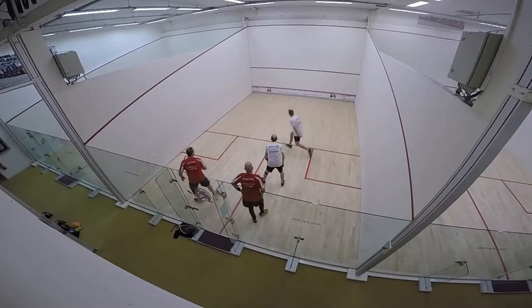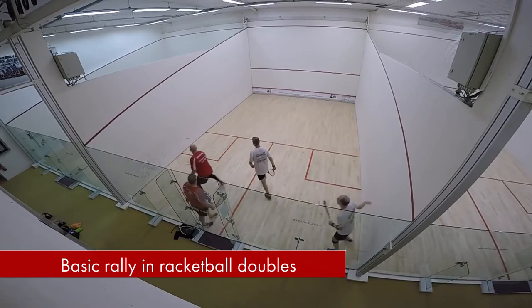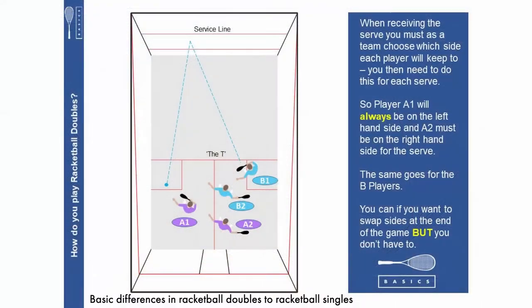When receiving the serve you must as a team choose which side each player will keep to. You then need to do this for each serve. So player A1 will always be on the left hand side and A2 must be on the right hand side for the serve.